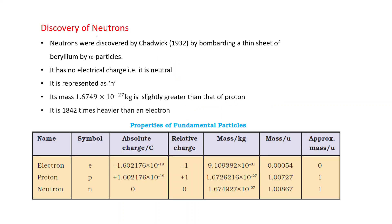Discovery of neutrons. Neutrons were discovered by Chadwick in 1932 by bombarding a thin sheet of beryllium by alpha particles. It has no electrical charge, that is it is neutral. It is represented as small n. Its mass is 1.6749 into 10 to the power minus 27 kilogram. This is slightly greater than that of proton. It is 1842 times heavier than an electron.